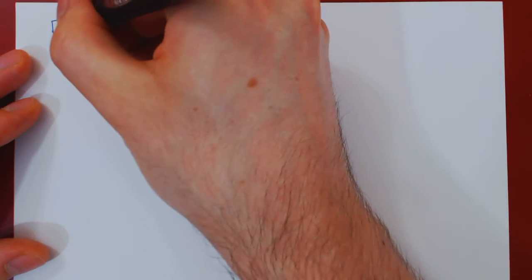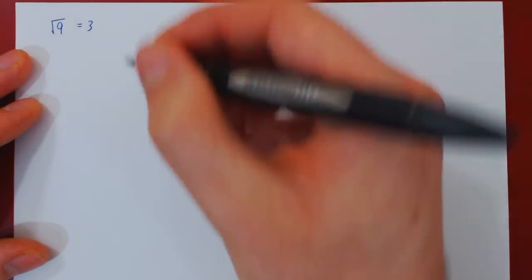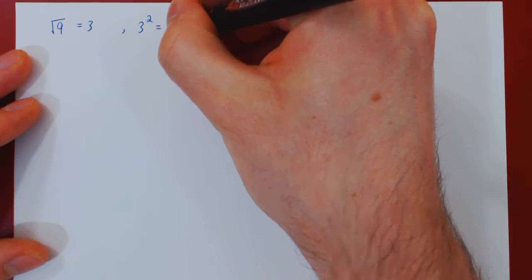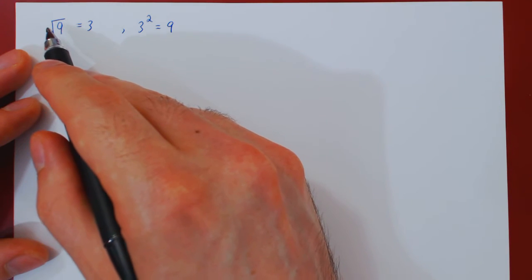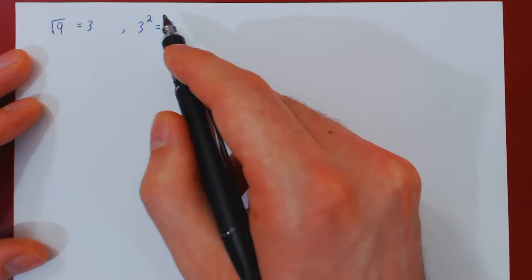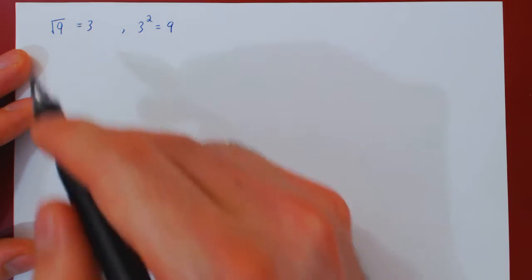So the square root of 9 is equal to 3, and this should be clear because 3 squared is equal to 9. So when you ask what is the square root of 9, you are asking for an integer squared that will equal 9.